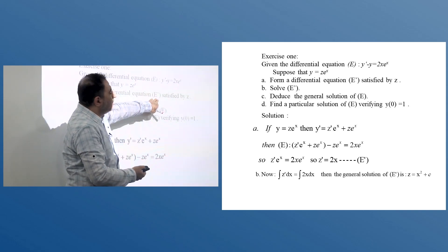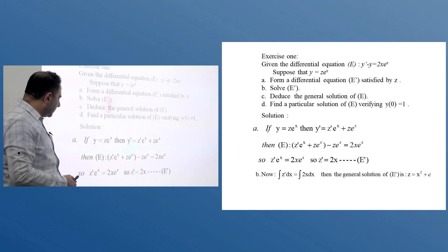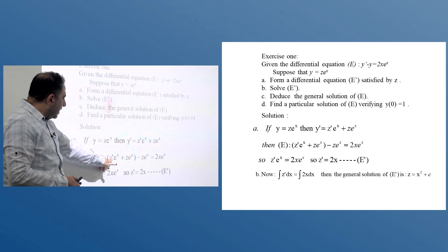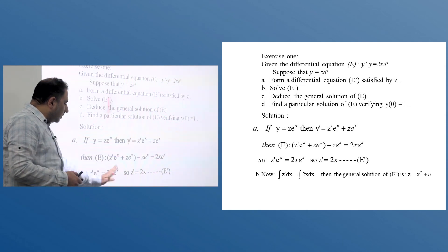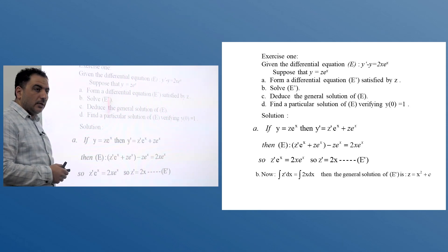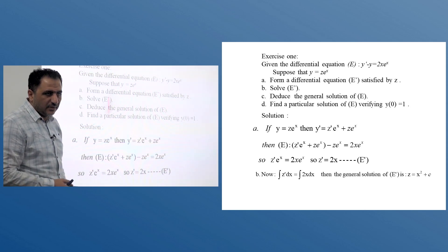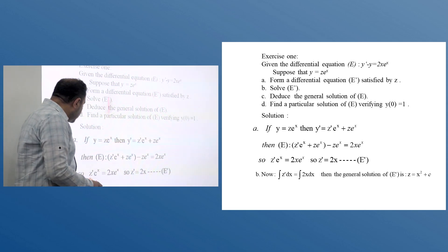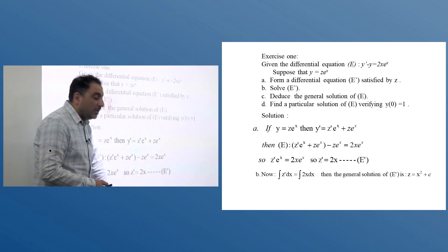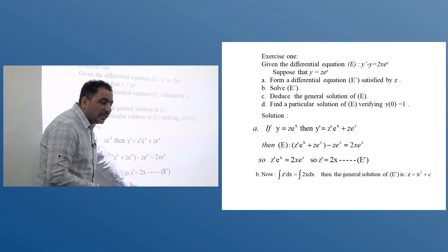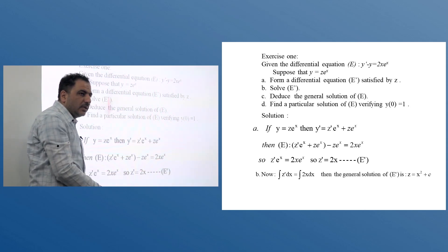To form the differential equation E' satisfied by z: simple calculations give z'e^x + ze^x - ze^x = xe^x, so z'e^x = xe^x. Since e^x is always positive and nonzero, we can divide both sides to get z' = x. Now, z' = x is indeed a differential equation satisfied by z — we see z' and x only; there is no y or y' present. It is a relation between z' and x.